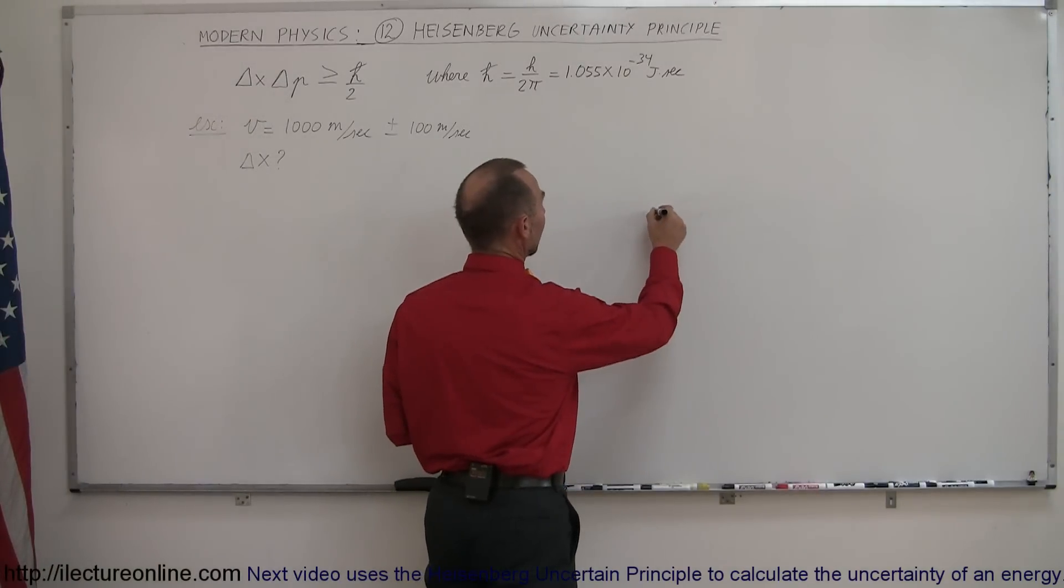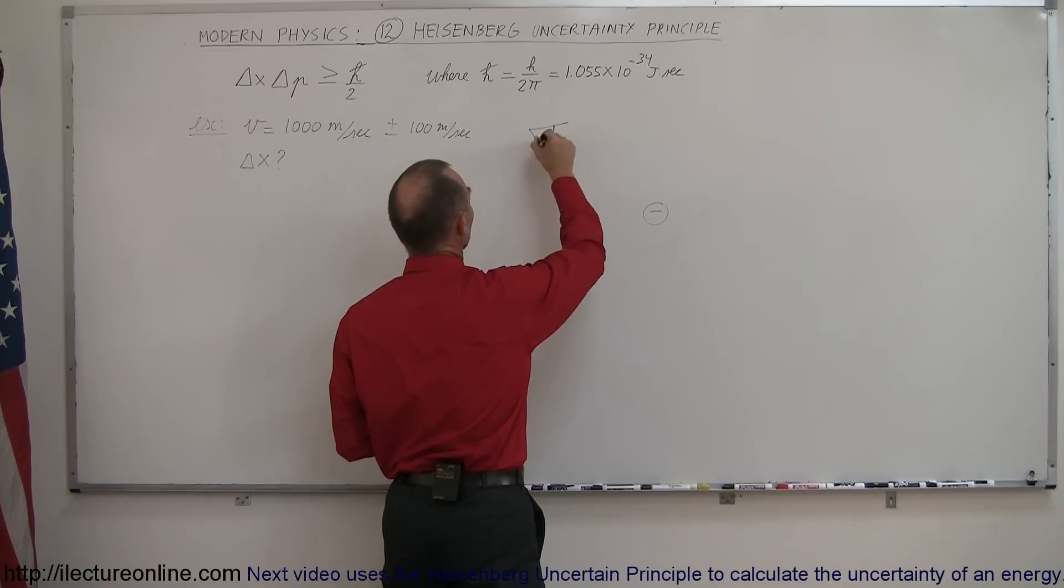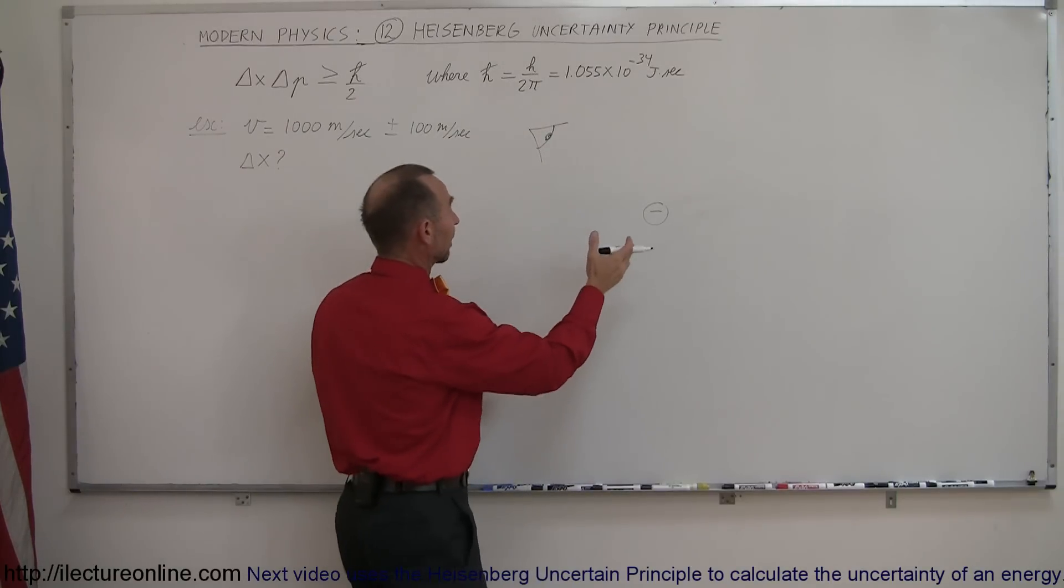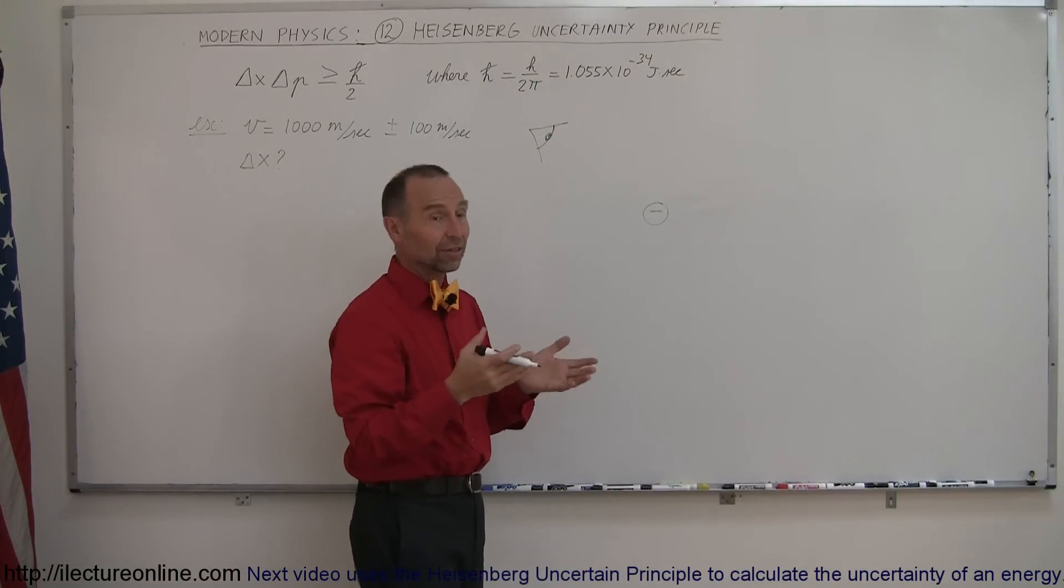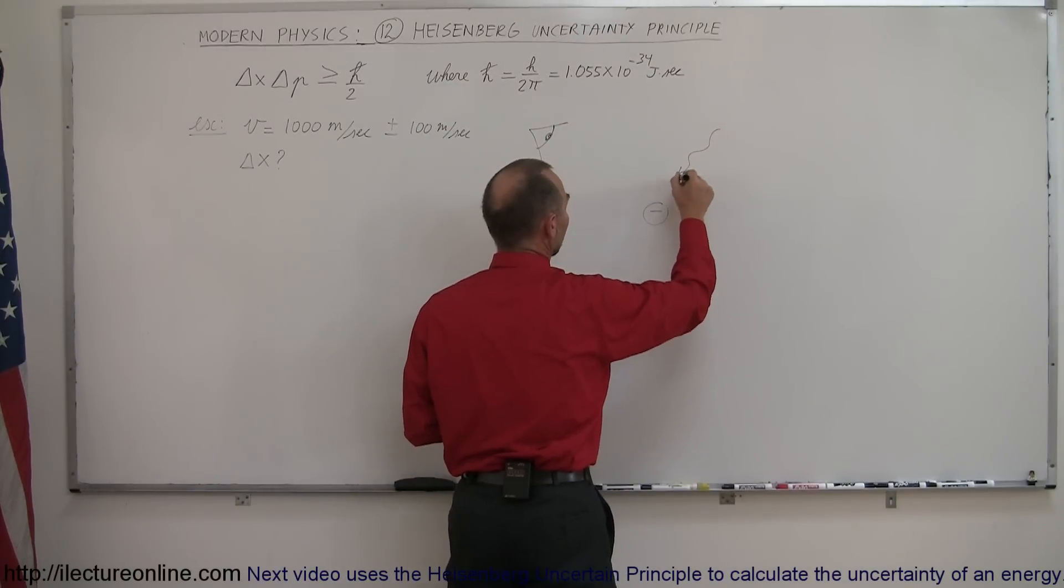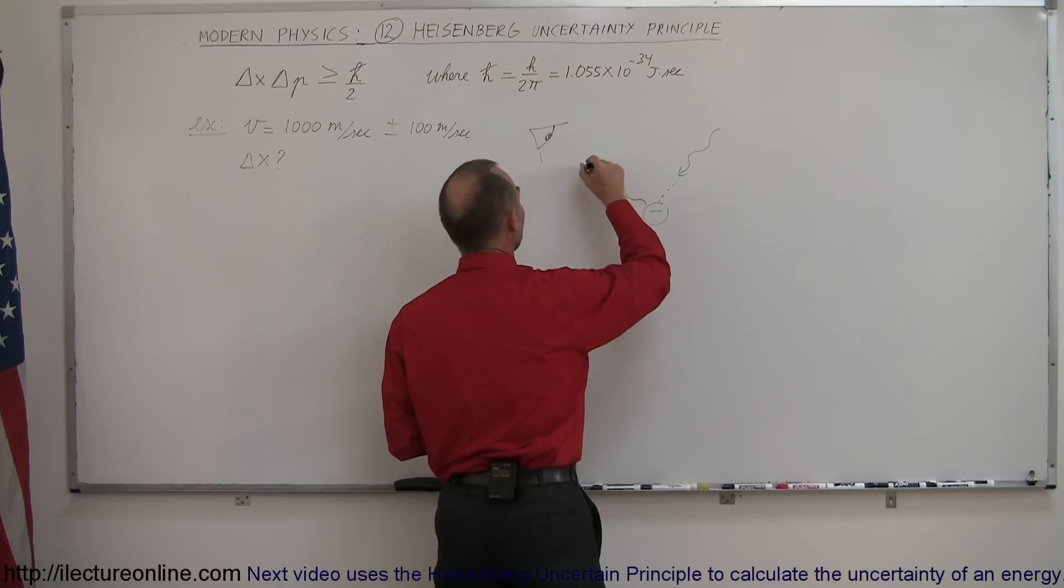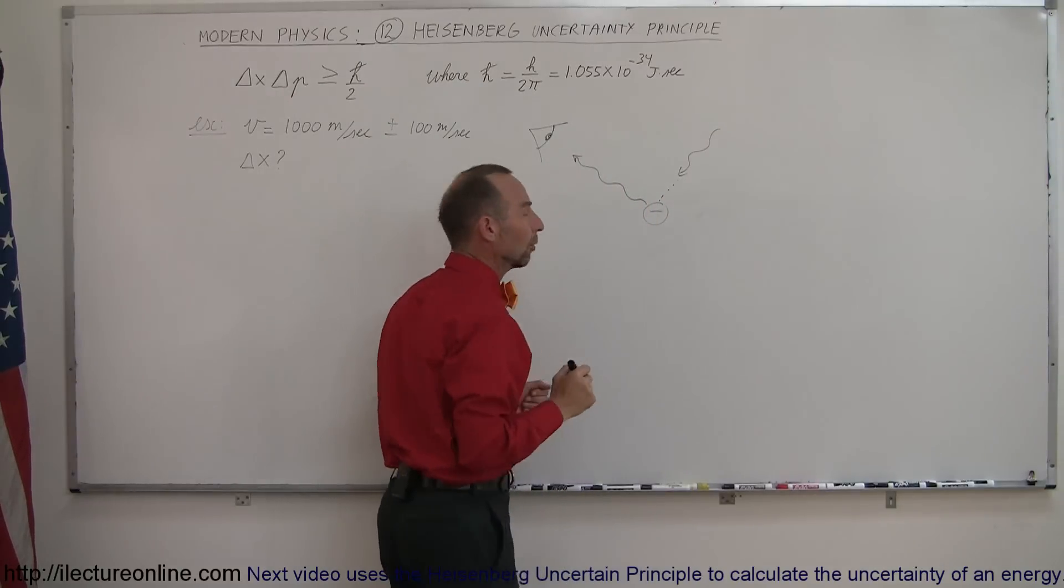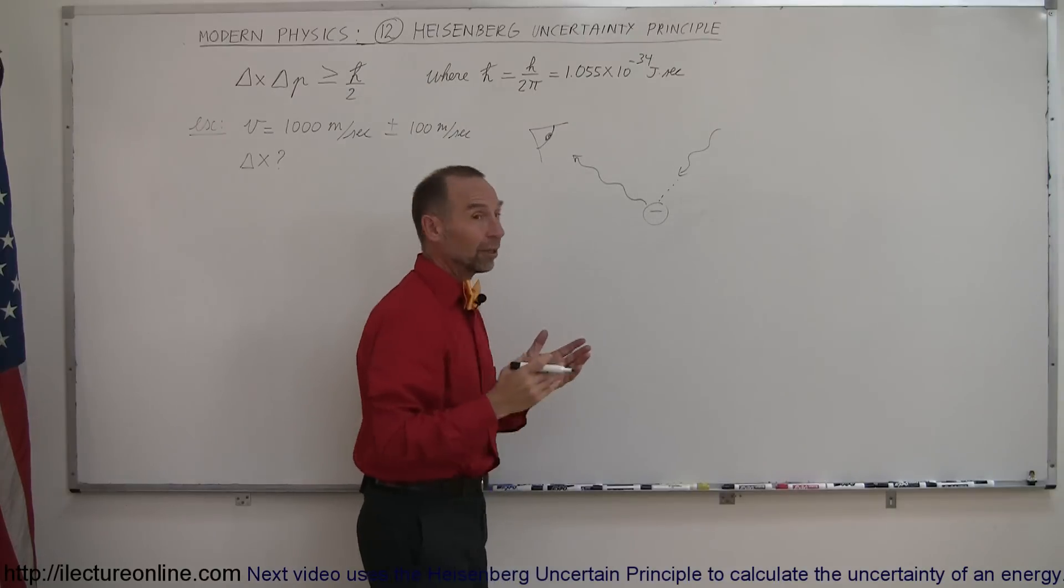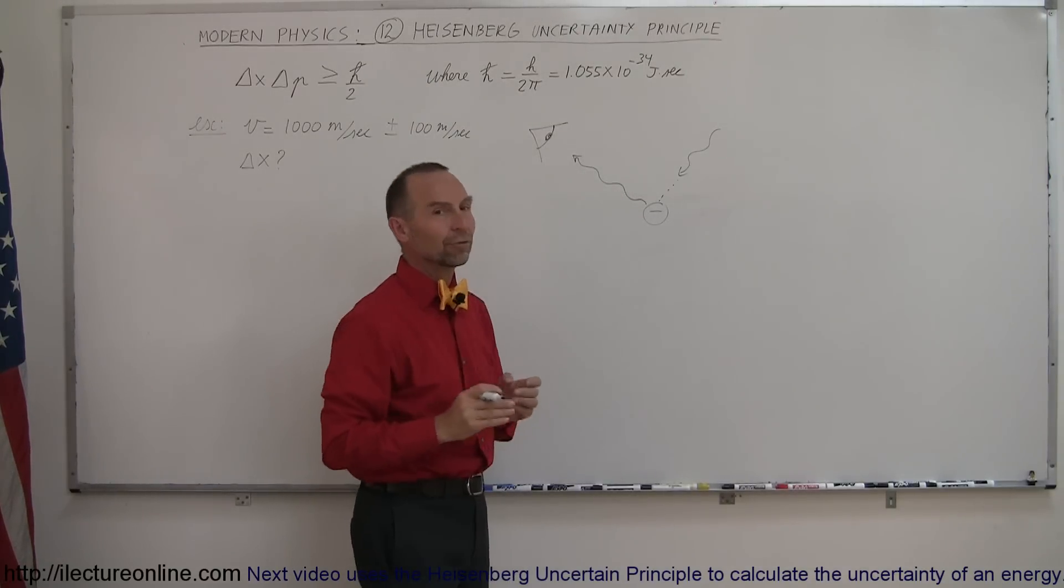So let's say there's an electron right there, and we want to try to observe the electron. For us to realize that the electron is there, something has to bounce off the electron and enter our eye so we can perceive its existence. So let's say that we have a photon coming along, it strikes the electron, it bounces off the electron, the photon then continues on to our eye, and the eye then receives the photon and says, ah, I realize that there's an electron right there.